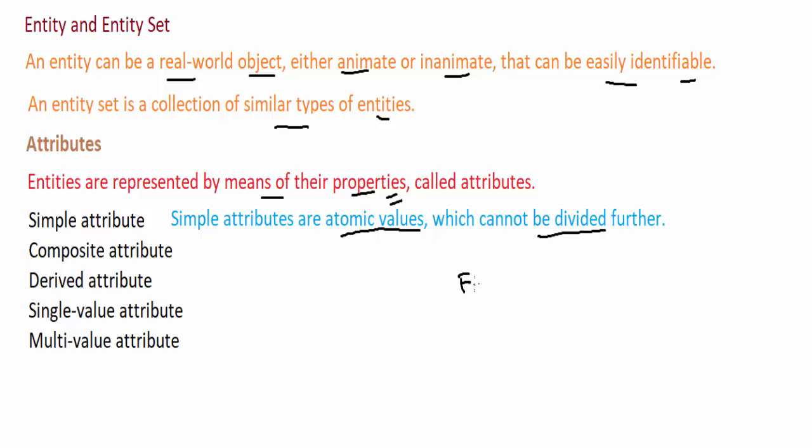Name can have many attributes like first name, middle name, last name. This is an entity having more than one attribute for it - that is a composite attribute.